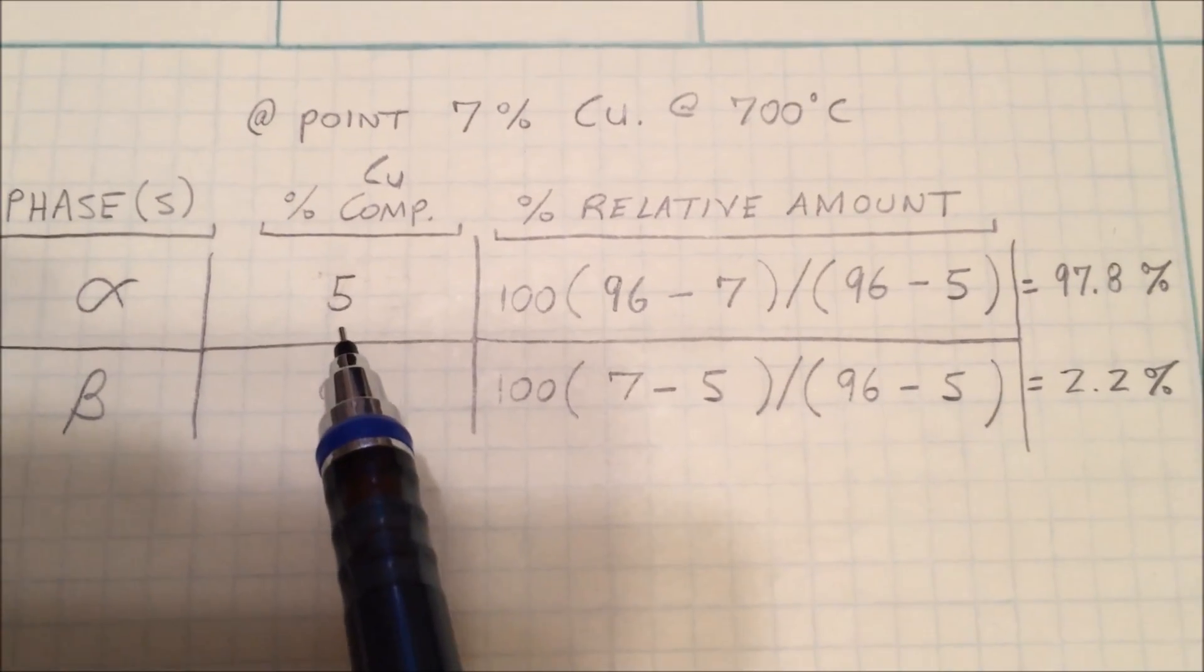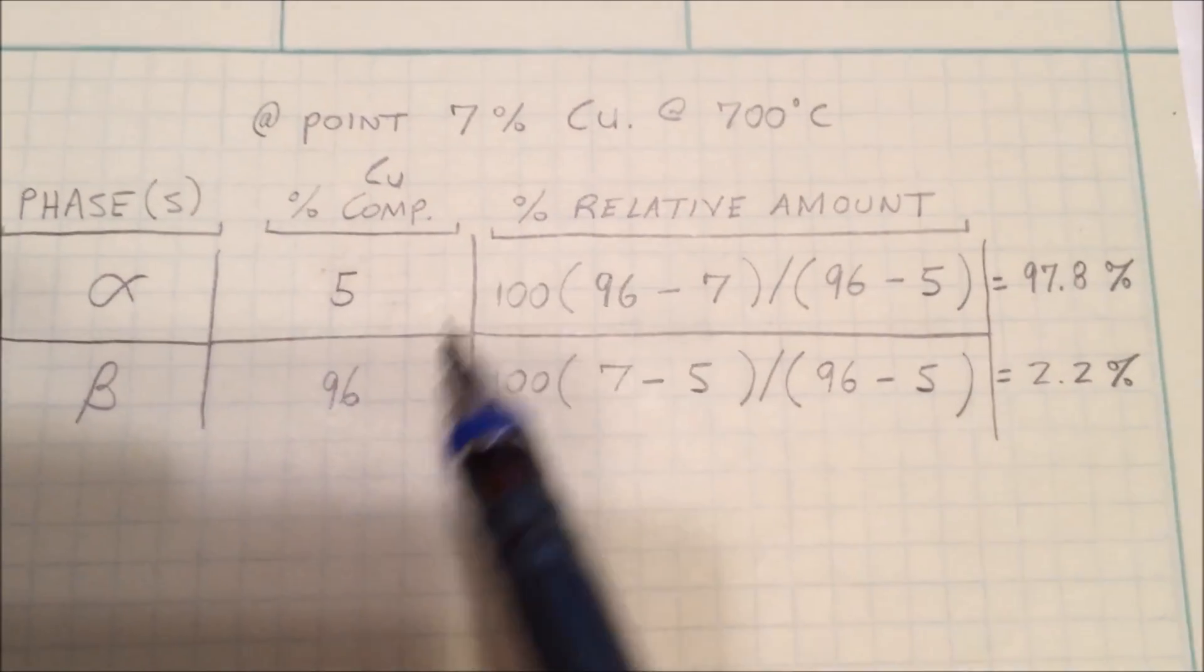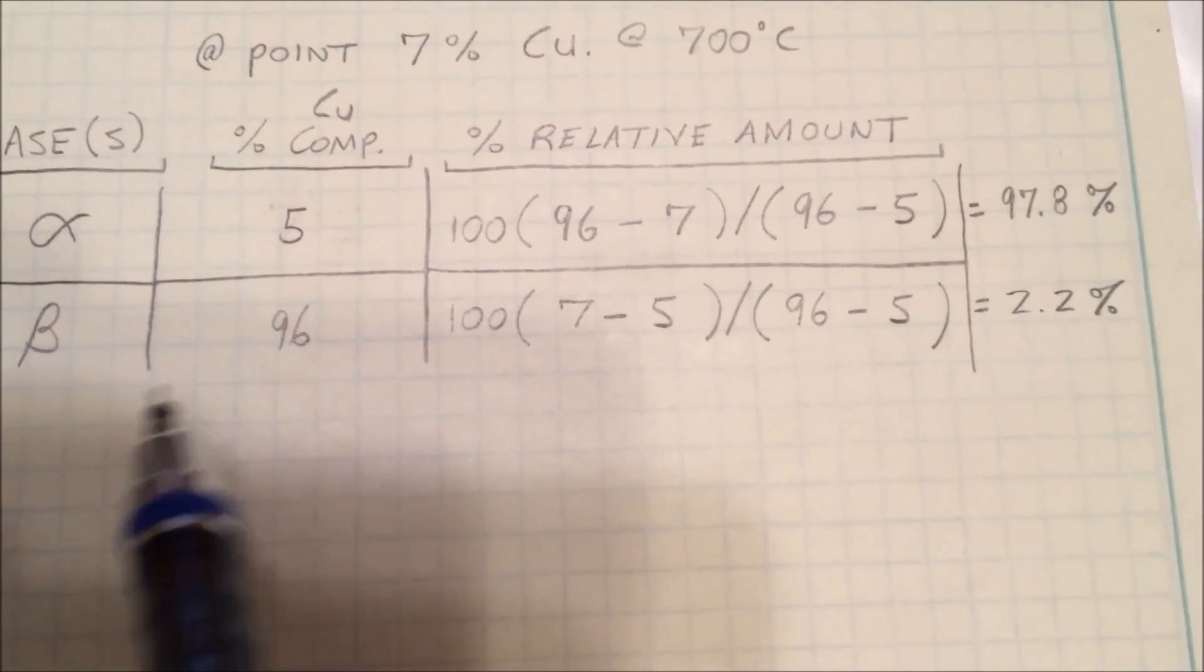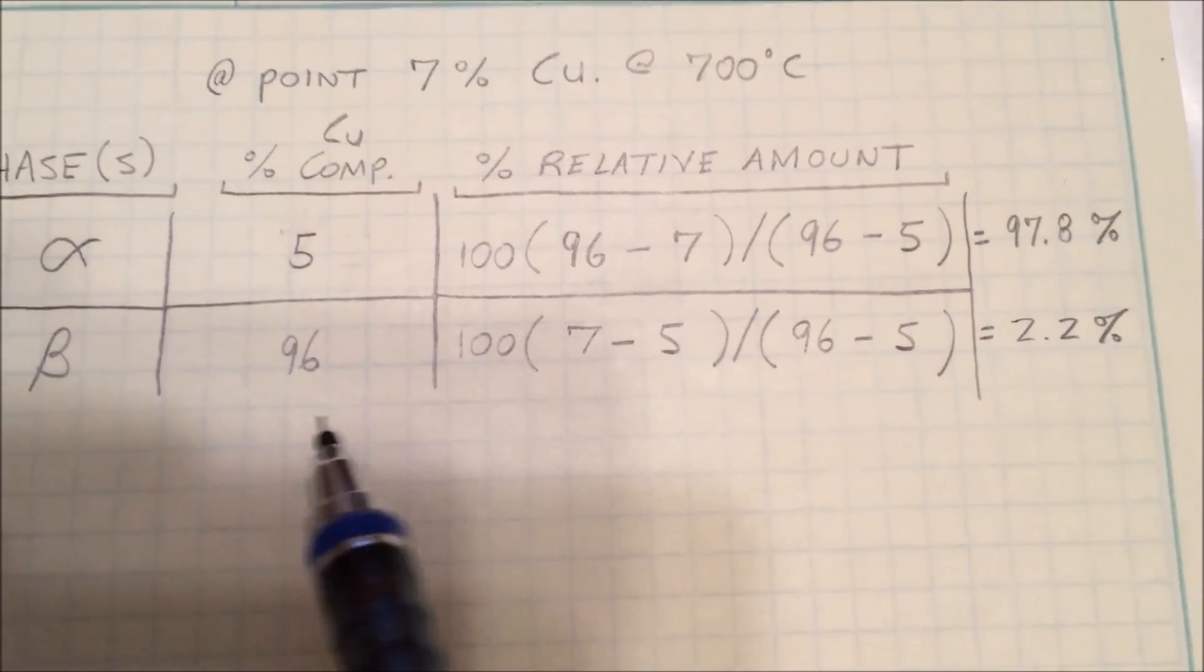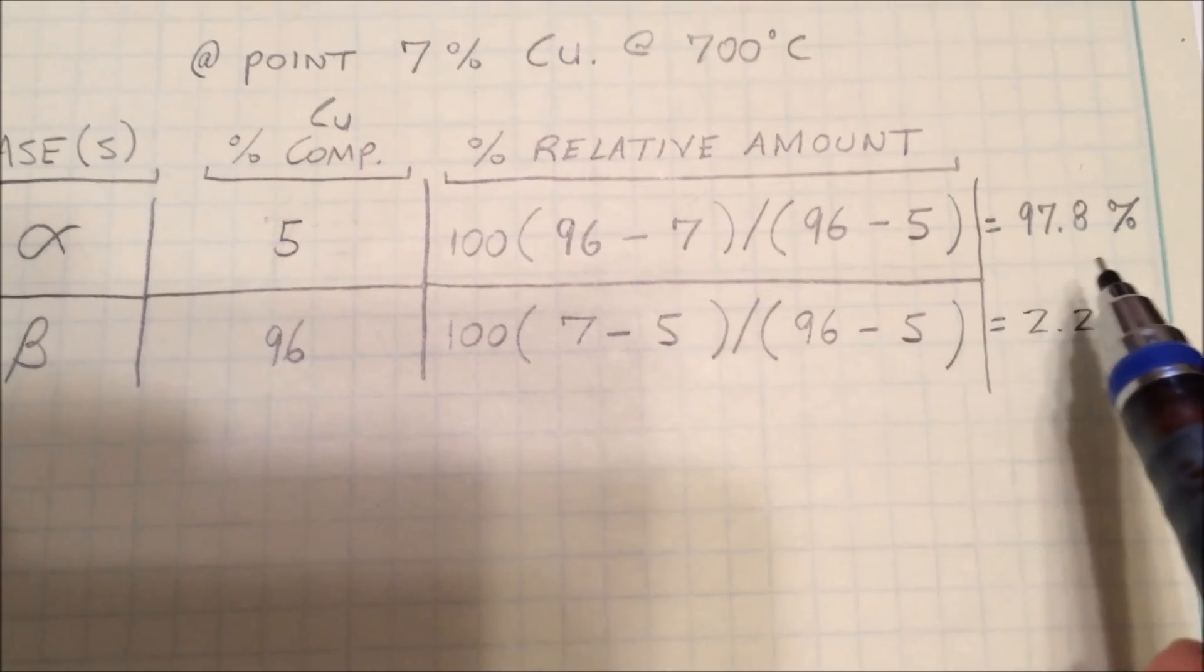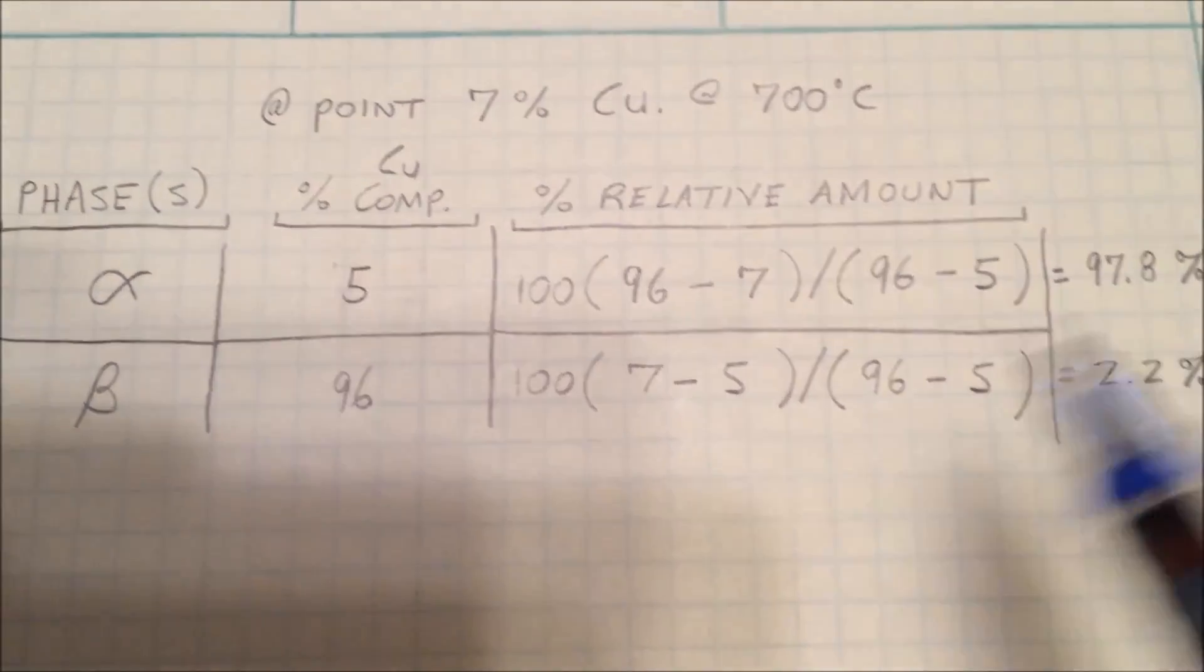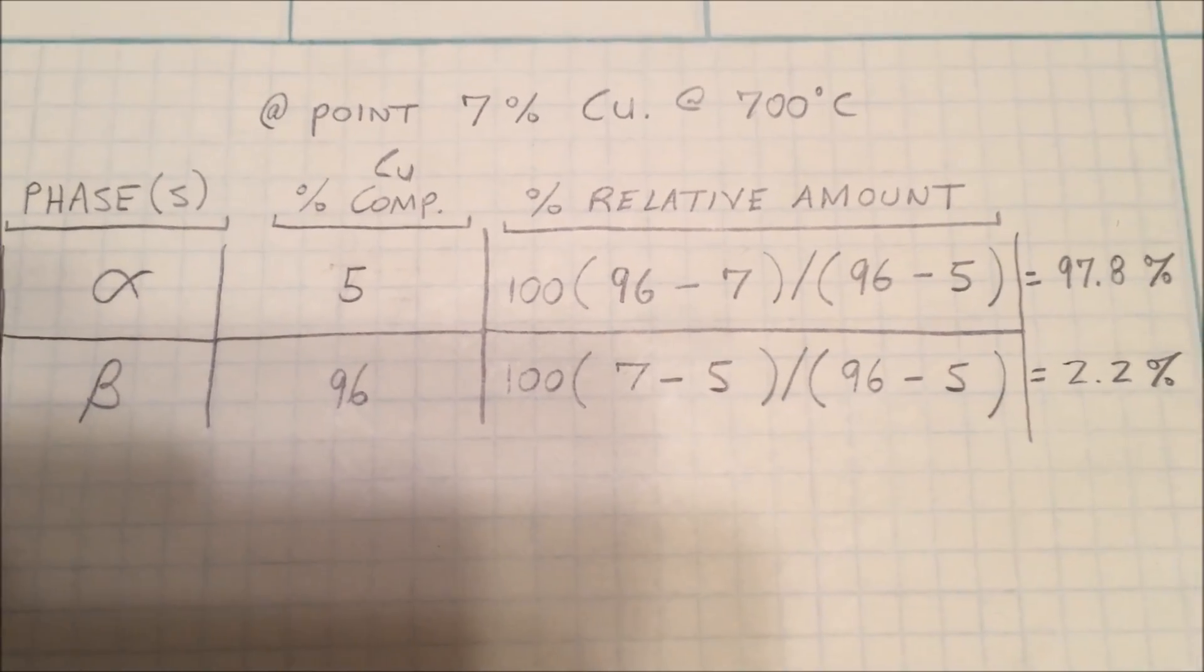So even though the graph shows us 96 and 5, which add up to 101, it's not the relative percent—it's just the percent composition. The relative percent is the important part. As you can see from the calculations here, these are the numbers that you're going to get.